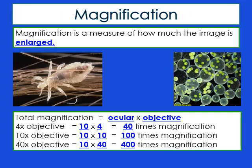Magnification is how enlarged an image is. Total magnification is determined by a simple equation: multiply the ocular lens power by the objective lens power. For example, with a 4x objective and a 10x ocular, the total magnification is 10 × 4 = 40x. Switching to the 10x objective gives 10 × 10 = 100x magnification. The 40x objective gives 10 × 40 = 400x magnification.